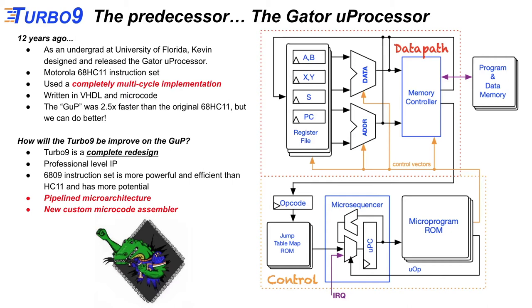Before we talk about our microprocessor, we need to talk about its predecessor. Twelve years ago, as an undergrad at the University of Florida, Kevin designed and released the Gator microprocessor. It was based on the HC-11 instruction set, used a completely multi-cycled implementation with no pipelining, was written in VHDL and microcode, and was a modest 2.5 times faster than the original HC-11. But we think we can do better. The Turbo 9 is a complete redesign, leveraging 12 years of industry experience each, based on the more powerful 6809 ISA, and doing something completely unique by pipelining the 6809 microarchitecture with a new custom microcode assembler.